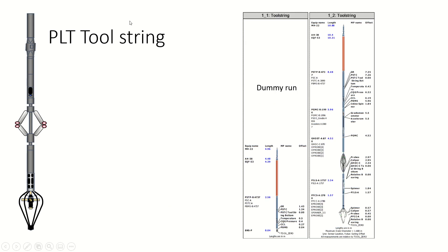We can see here the PLT toolstring and the parts and sensors of this tool. At the bottom of the tool you can see a component named the spinner. We can also see a gauge for the centralizer and other sensors, which we will explain.